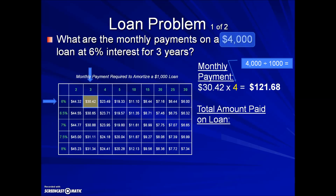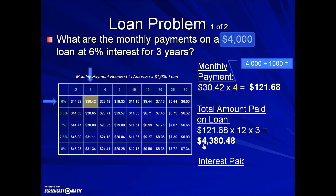At the end of those three years, paying $121.68 per month, 12 times a year for three years — a total of 36 payments — they have paid a total of $4,380.48. They borrowed $4,000 and are paying back this amount. The difference between those two is the cost, or the interest paid. So if we take the total amount paid over the course of the three years minus the initial amount borrowed, that gives us the interest or cost of this loan.